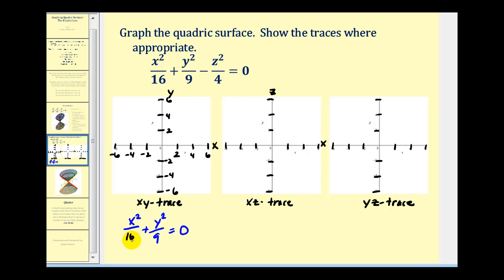That's not going to be extremely helpful as a trace. So what we're going to do is determine a trace in a parallel plane. If we let z equal two, then we'd have two squared over four — we'd have a minus one here. So if we add one to both sides of the equation, we could use x squared over sixteen plus y squared over nine equals one for our trace. Again, this would be when z is equal to two, so this plane would be two units above the xy plane, but we're going to go ahead and use it as the xy trace.